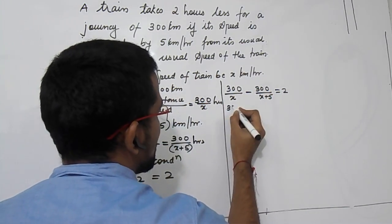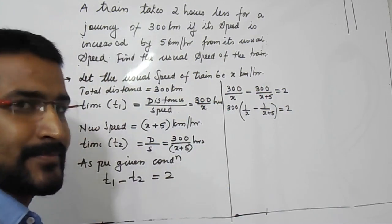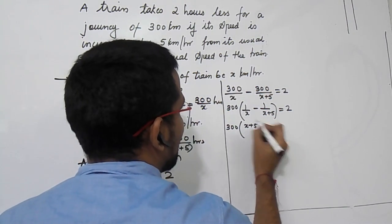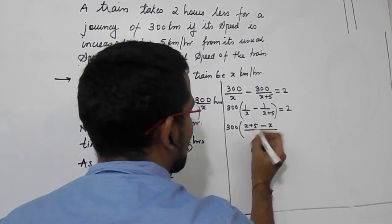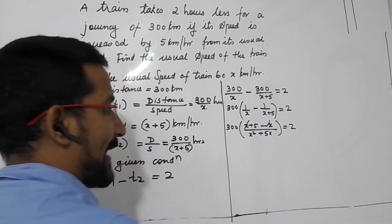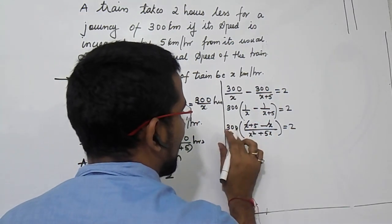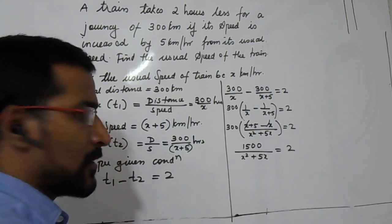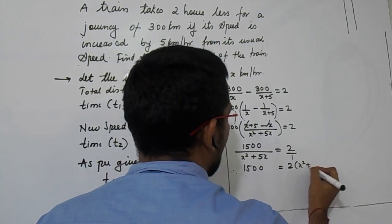Take 300 as a common factor: 300 times (1/x minus 1/(x+5)) equals 2. After cross multiplication, the numerator simplifies to 5, giving 300 times 5 divided by x(x+5) equals 2. So 1500 equals 2 times (x squared plus 5x).